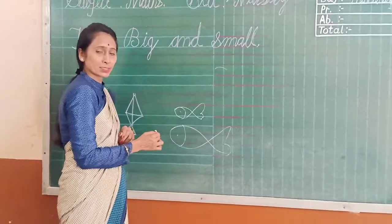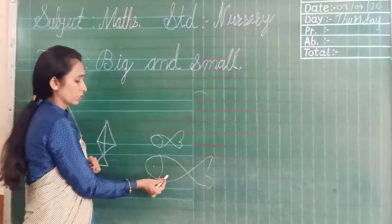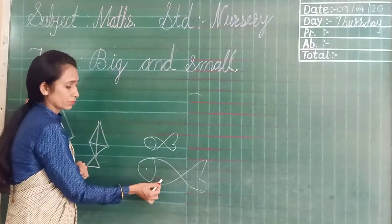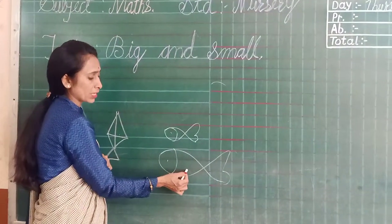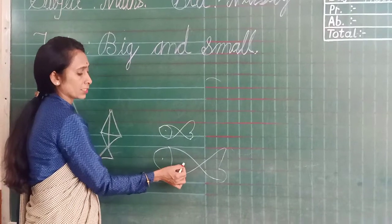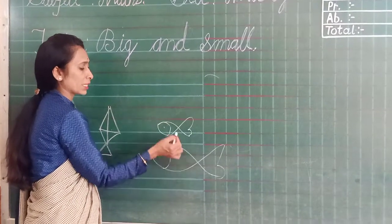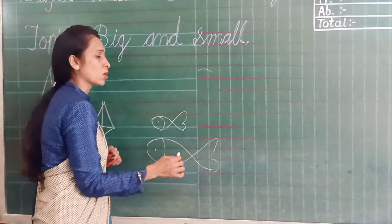What is this? This is a fish. Fish is big. Yes, this one is big and this one is small.